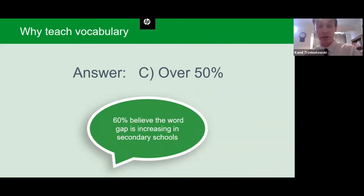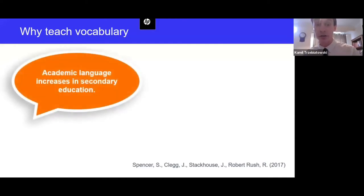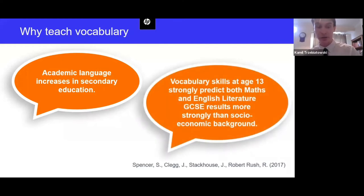This affects even those with English as their first and only language, and this is why vocabulary development is not only important for learners using EAL but for a large portion of our pupils. One strong factor is that academic language increases in secondary education, meaning learners face far more abstract and specialized language. We also know that vocabulary skills at age 13 strongly predict both maths and English Literature GCSE results — more strongly than socioeconomic background.